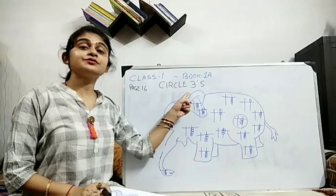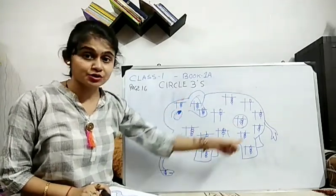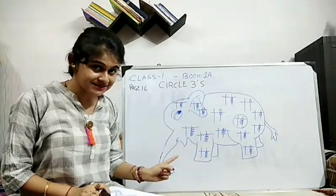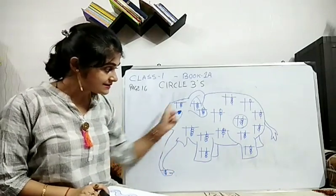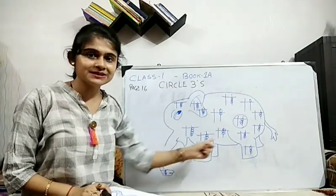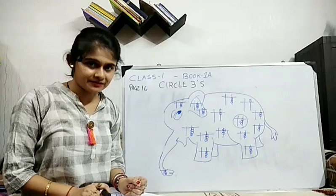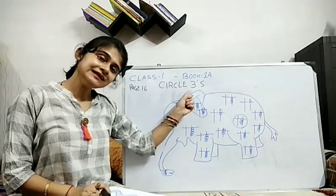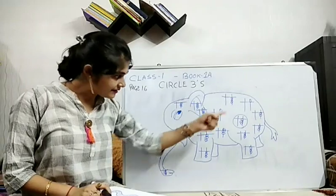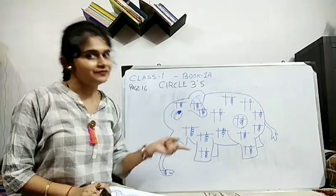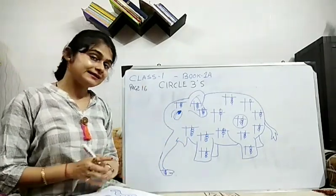Circle threes. That means, can you see this huge elephant? You can see inside so many beads are there and numbers are there, right? But we have to find out only 3. So wherever we will see 3, we will circle. Okay, let's start.